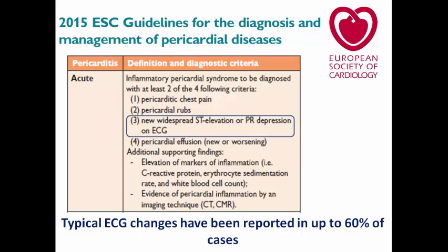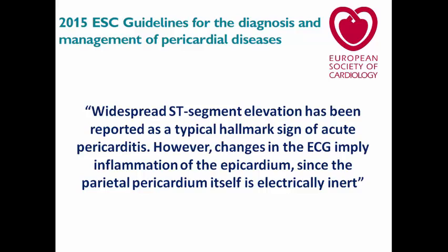These typical ECG changes are reported in up to 60% of pericarditis cases. Diffuse ST elevation is more important than the knuckle sign, since the knuckle sign can sometimes appear in myocardial ischemia. Diffuse ST elevation with PR depression should raise suspicion of pericarditis. These changes signify inflammation of the visceral pericardium, since the parietal pericardium itself is electrically inert.